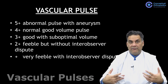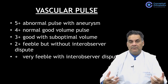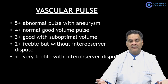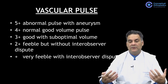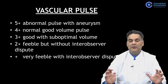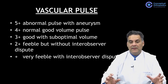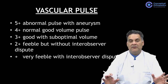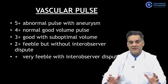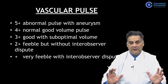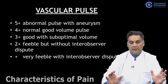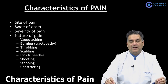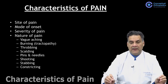Pulse grading: 5+ is an abnormal pulse associated with aneurysm; 4+ is a normal good volume pulse; 3+ is good but suboptimal volume; 2+ is feeble but without inter-observer dispute; and 1+ is very feeble with inter-observer dispute. Remember, 4+ is the normal good volume pulse. Characteristic of orthopedic complaints, patients start with pain — it is the most common symptom. Talk about the site of pain.